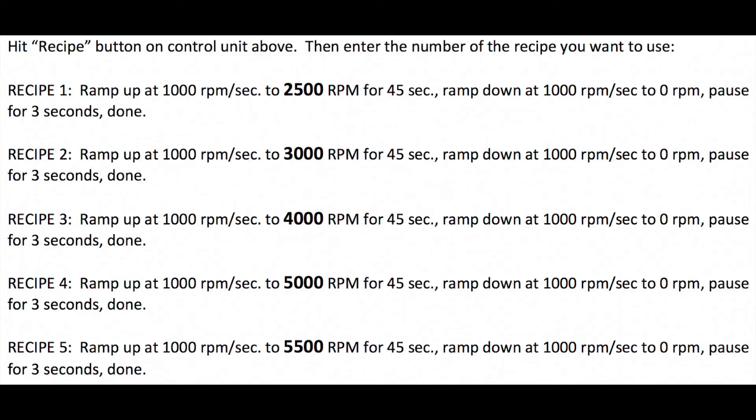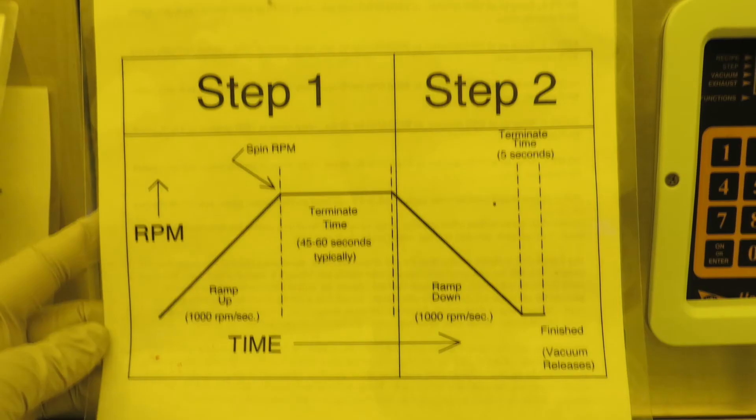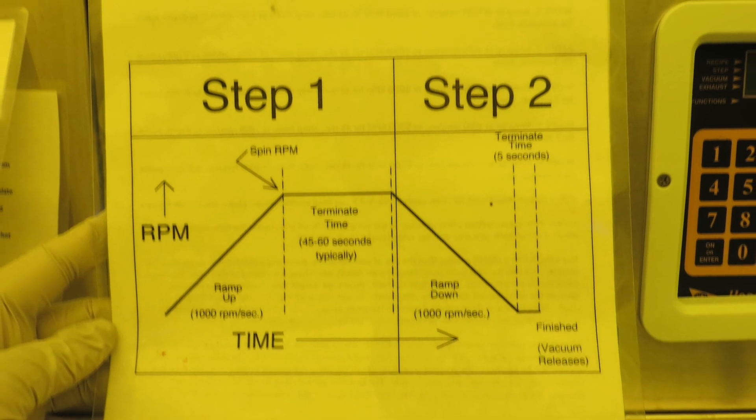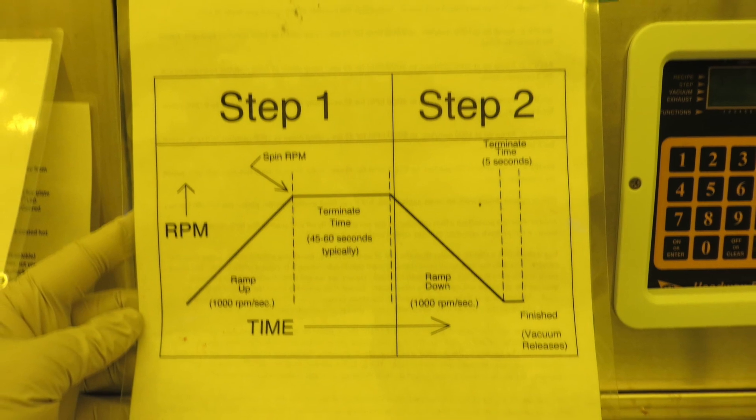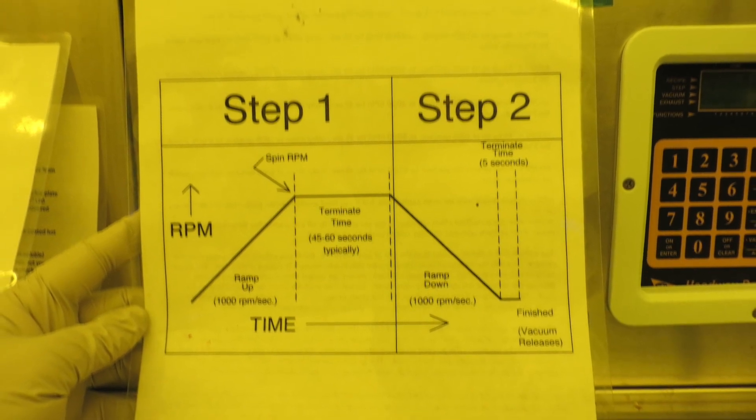Now I'll talk about programming custom recipes and also how to verify that the standard recipes haven't been changed accidentally. All of the standard recipes have just two steps. Even most of the custom recipes have only two steps, but it is also possible to make a custom recipe with up to nine steps.